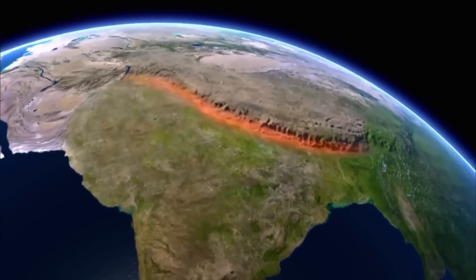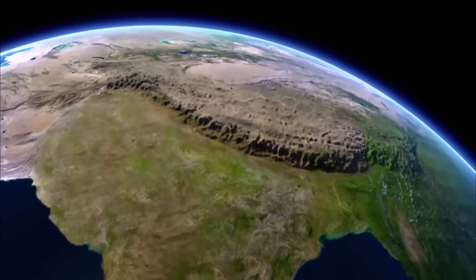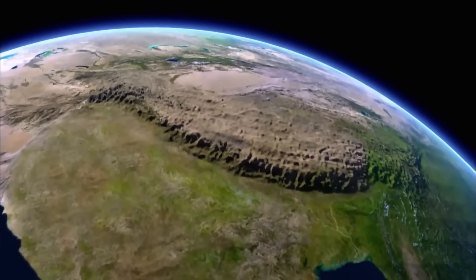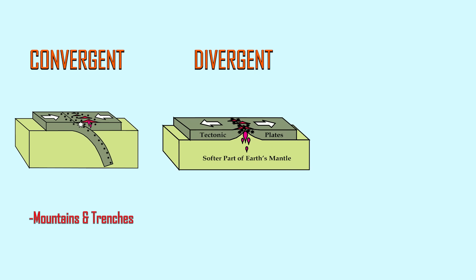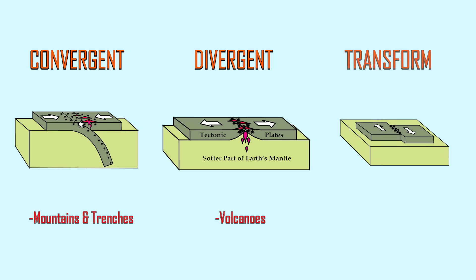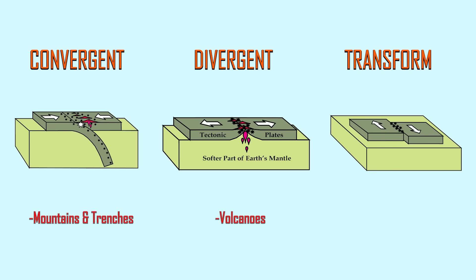Now we will use our plate tectonics to accurately generate mountains. There are three main types of tectonic plate boundaries: Convergent, which occur when plates crash head-on into each other and form mountains and trenches; Divergent, where the plates move apart and release magma from the core creating volcanoes; and Transform, where the plates slide past each other and cause earthquakes — which we will disregard for now.